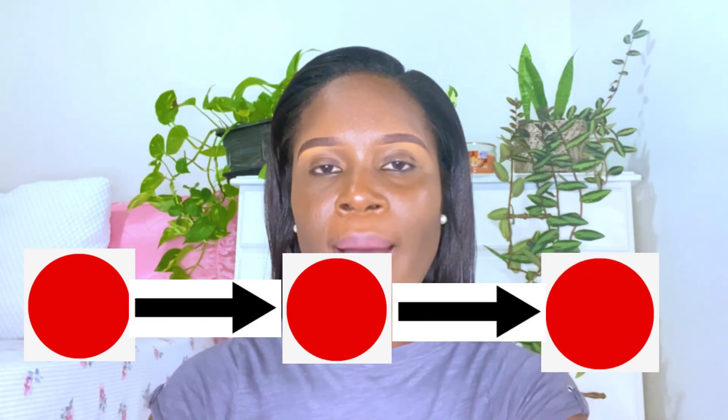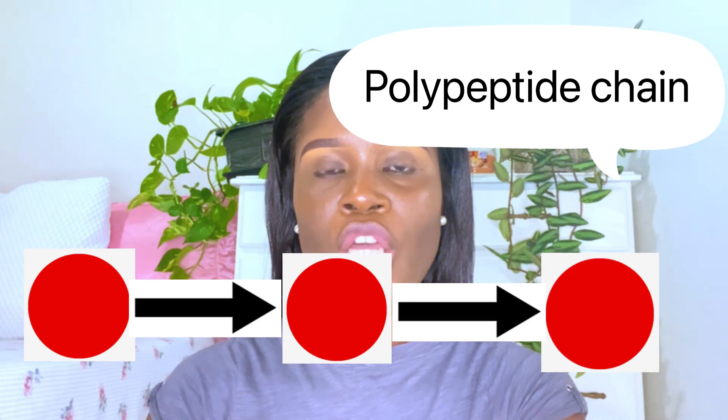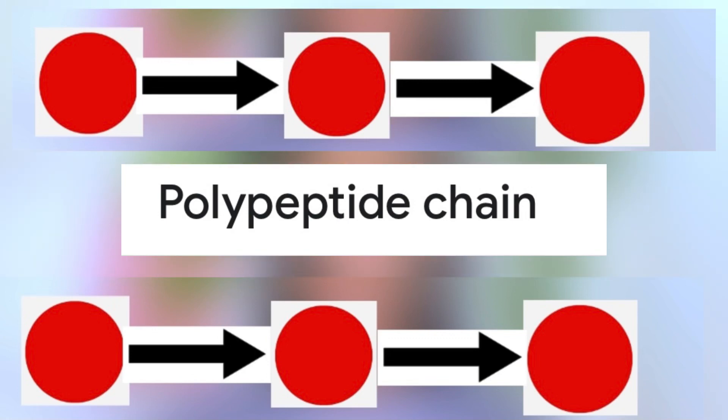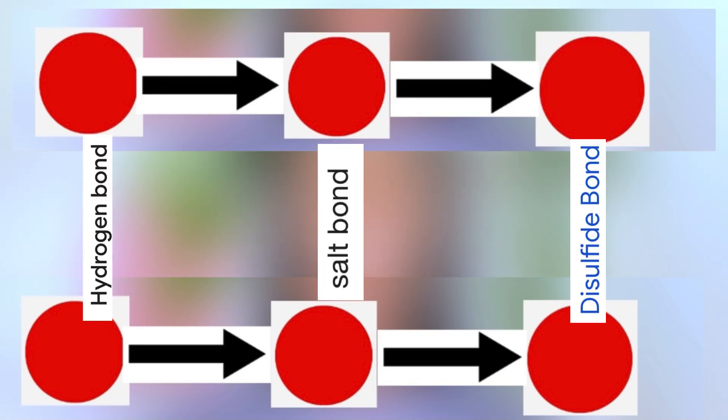Hair is made up of 95% protein, and this protein is called keratin. The keratin is made up of several amino acids. These amino acids are connected by what we call a peptide bond, and several of these create what we call a polypeptide chain. Two polypeptide chains are connected by side bonds — the hydrogen bond, the salt bond, and the disulfide bond. The disulfide bond is the only bond that can be broken by chemical means, so once the relaxer gets into the cortex, its main aim is to break the disulfide bond.